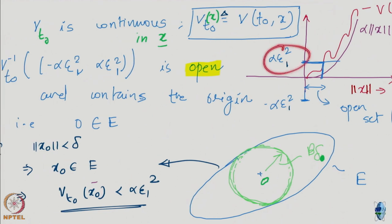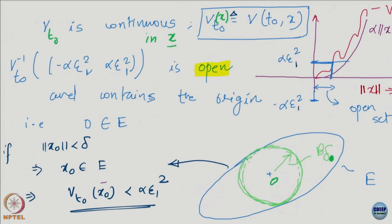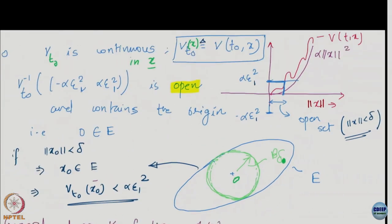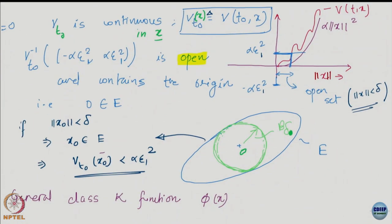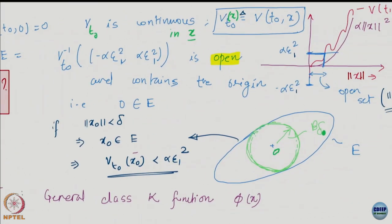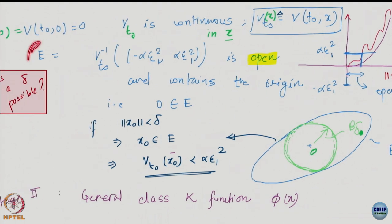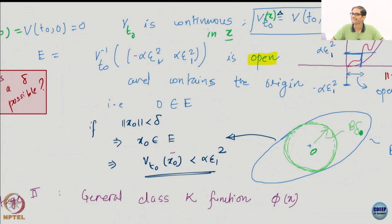We are not even interested in alpha * epsilon_1 squared itself. We are interested in something below it. So I am going to define a set E. This is just a horizontal line — I am defining E which is the open set minus alpha * epsilon_1 squared to alpha * epsilon_1 squared. This is an open set. And I am taking its inverse image under v_t0.